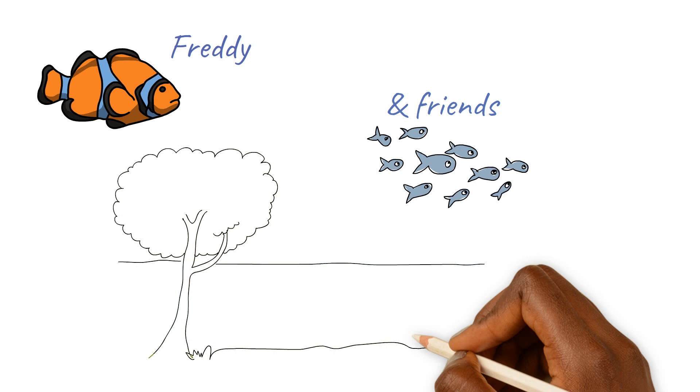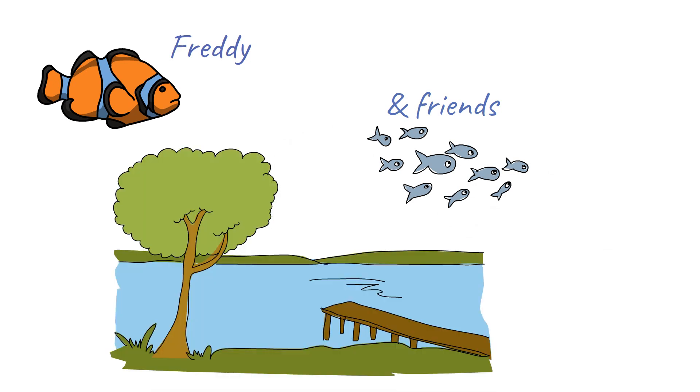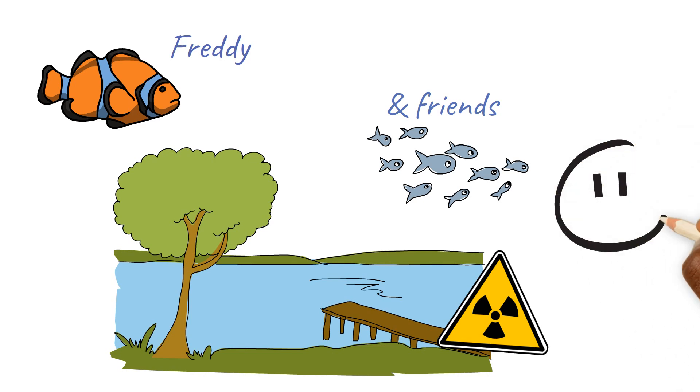All these lovely fish live in a big beautiful lake. However, lately the lake where Freddie and his friends live has been getting polluted with a lot of dangerously toxic chemicals. Why is this happening?